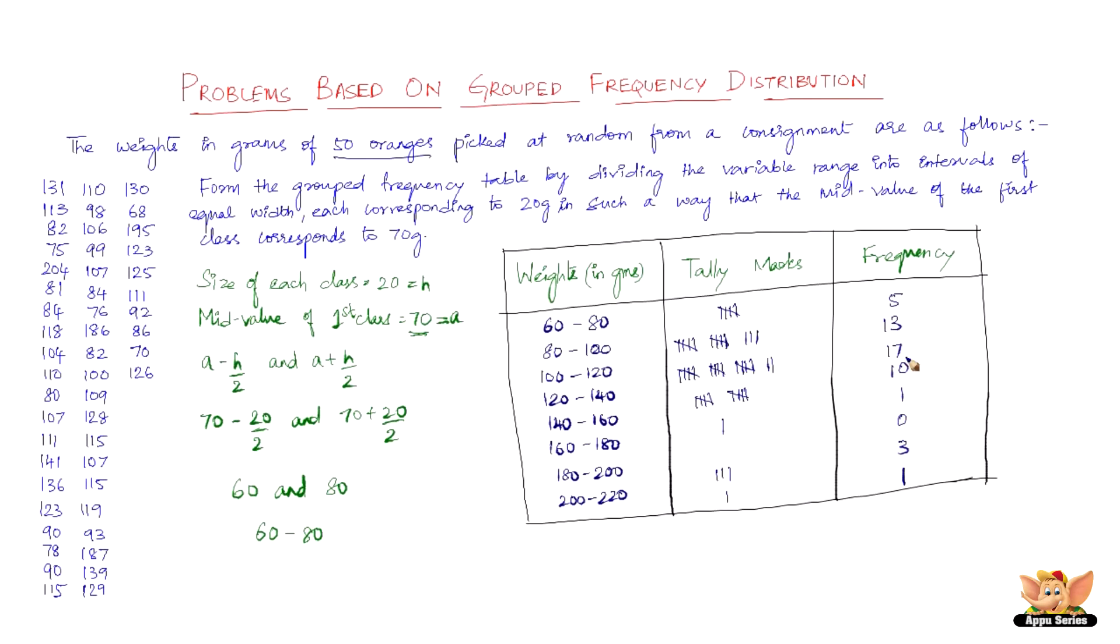Let's verify: 5 + 13 = 18, 18 + 17 = 35, 35 + 10 = 45, 45 + 1 = 46, 46 + 3 = 49, 49 + 1 = 50. So we have the grouped frequency distribution of the weights of 50 oranges in grams. This ends the video on grouped frequency distribution.